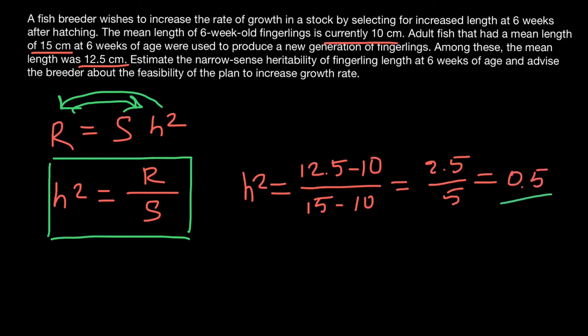This is our answer: narrow-sense heritability equals 0.5. Now for our recommendation. The question asks us to estimate narrow-sense heritability and advise the breeder about the feasibility of the plan to increase growth rate. The plan this breeder is using is very good